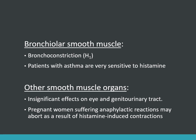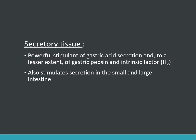Bronchoconstriction occurs and patients with asthma are very sensitive to histamine. It has insignificant effects on the eye and genitourinary tract; however, pregnant women suffering from anaphylactic reactions may abort as a result of histamine-induced uterine contractions. Histamine has a powerful stimulant effect on gastric acid secretion and, to a lesser extent, on gastric pepsin and intrinsic factor secretion. It also stimulates secretions in the small and large intestine.